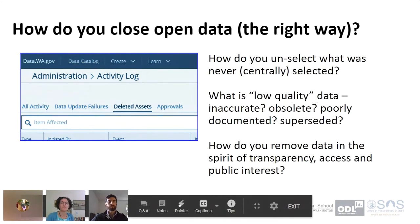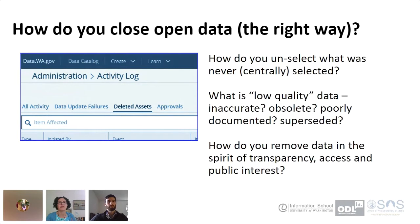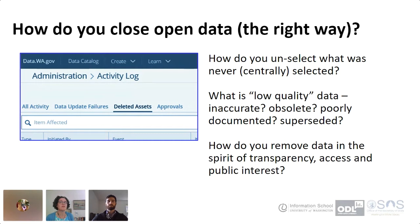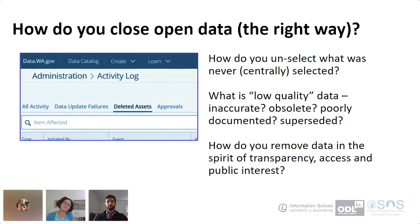In a library, selection — adding content — or de-selection — weeding content — happens on a single basis, and that's the collection development policy. Ideally, a library has a policy written down that says: this is our community, these are the needs we believe our community has, and in order to meet those needs we are going to collect these sorts of things and not collect these other sorts of things. So as the library adds or takes things away, there is a document that provides clear, transparent criteria and is there to engender confidence and trust in the institution.